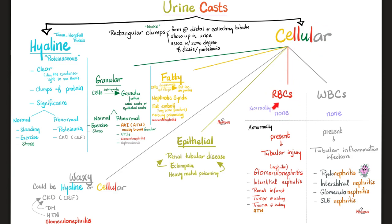Cellular casts: red blood cell casts are always pathological — blame the kidney tubules. White blood cell casts point to inflammation or infection in the tubule, not the bladder or urethra. Epithelial casts represent tubular damage. Causes include heavy metal poisoning, eclampsia and preeclampsia with severe features, and anything that destroys the tubule. I recommend studying renal tubular acidosis, which has many causes of tubular damage.